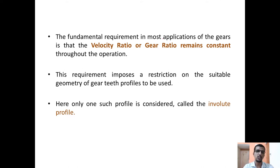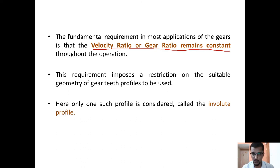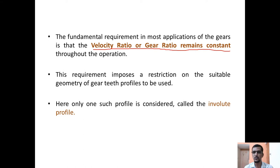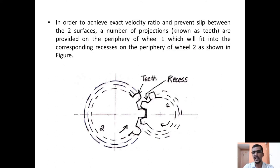The fundamental requirement in most applications of gears or any other power transmission mechanism is to make sure that the velocity ratio or the gear ratio remains constant. This indicates that there is no power loss — when power gets transmitted from the driver to the driven there is no loss in power. This requirement imposes a restriction on suitable geometry for the gear teeth, and in this case we have chosen the involute profile.